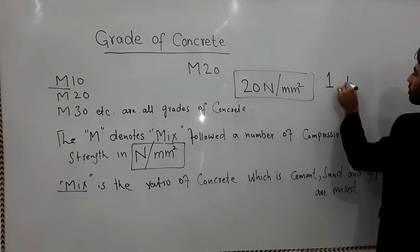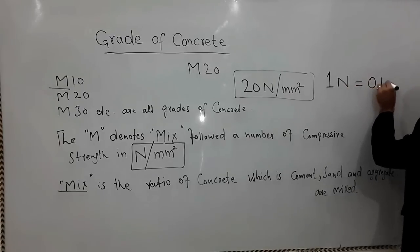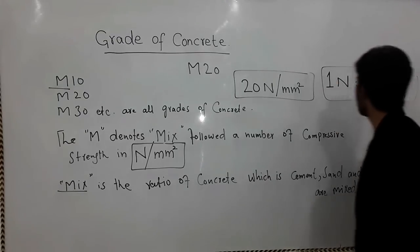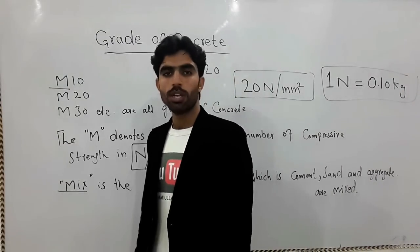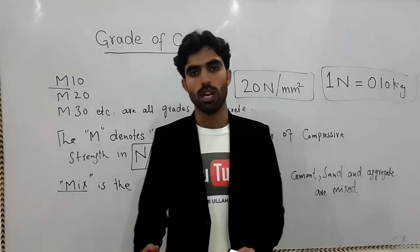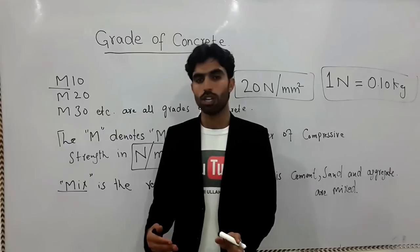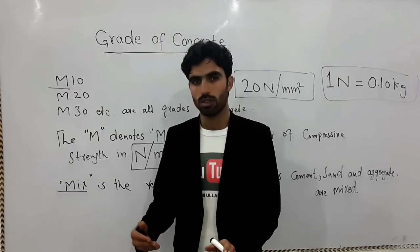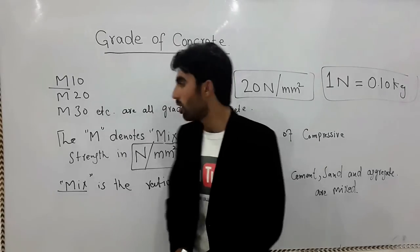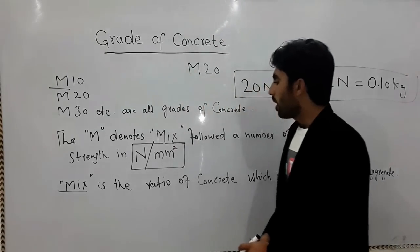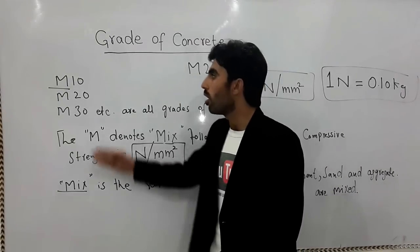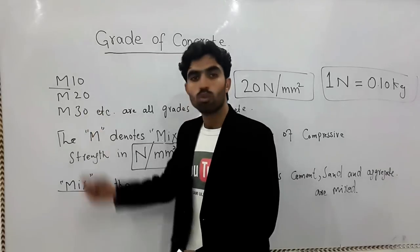One newton is equal to 0.10 kg. So now you can calculate the compressive strength of any surface made of concrete. In another lecture I will show you what the ratios are for M10, M20, and M30.